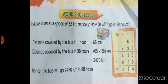So distance covered by the bus in 1 hour is equal to 65 km and distance covered by the bus in 38 hours. To find the value of more, you have to multiply 65 into 38. When we multiply 65 into 38, then answer will be 2470 and write unit km with number.